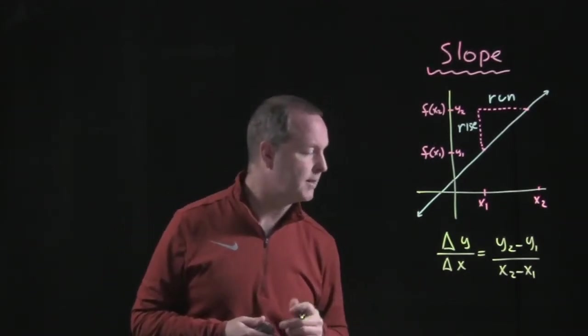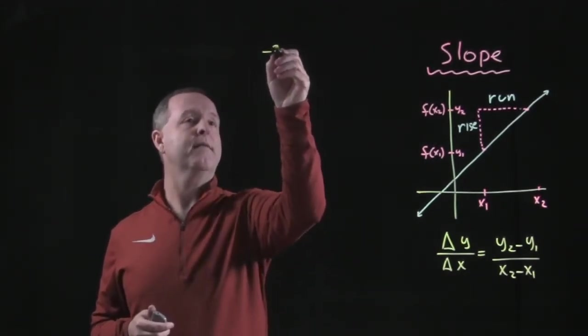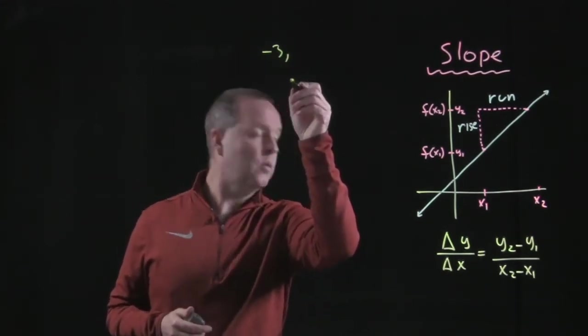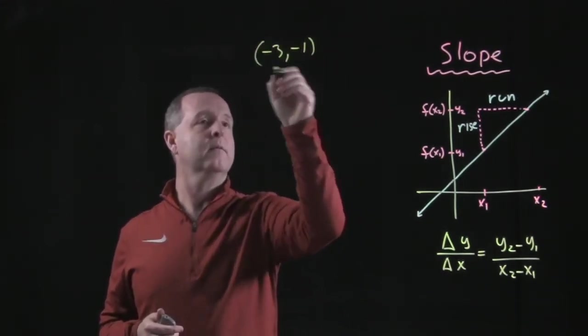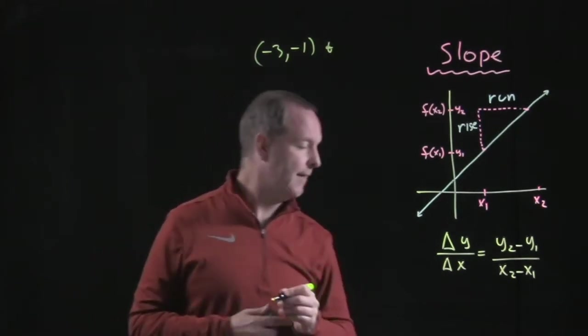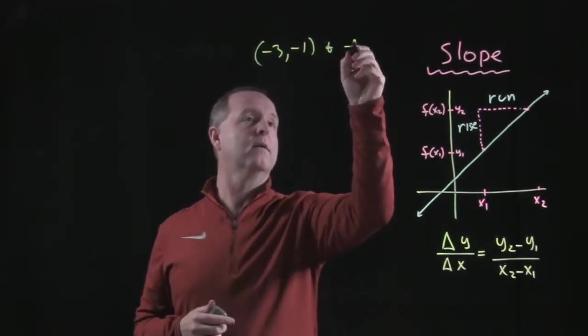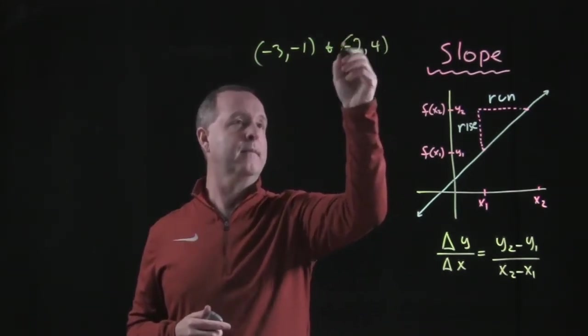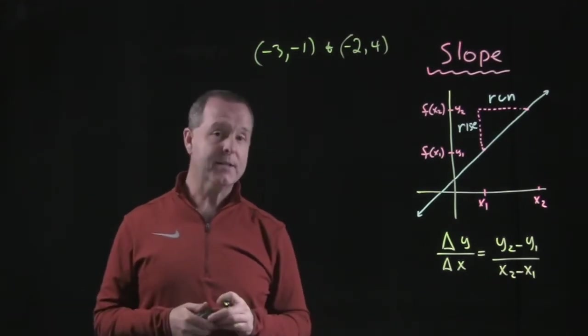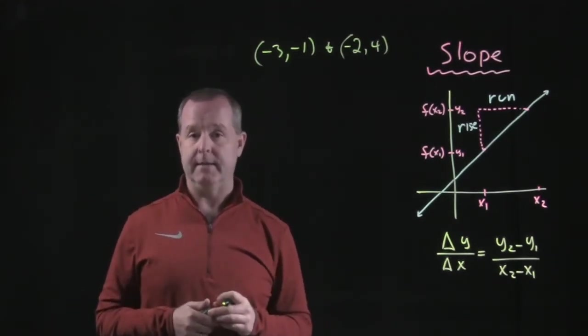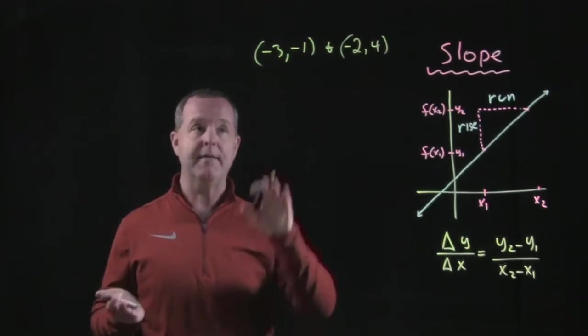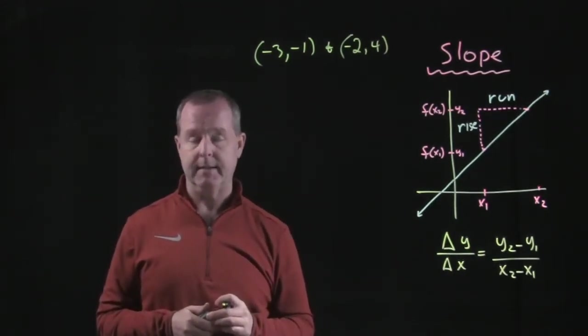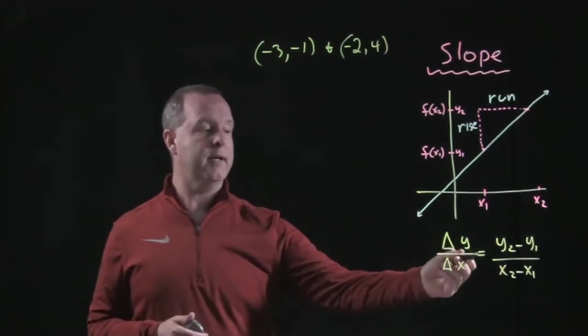So imagine that I have two points. I have one point, negative 3 and negative 1. And I have another point of negative 2 and 4. So between those two points, can we determine what its slope is? Or the slope of the line that contains those two points? Look at our model here.